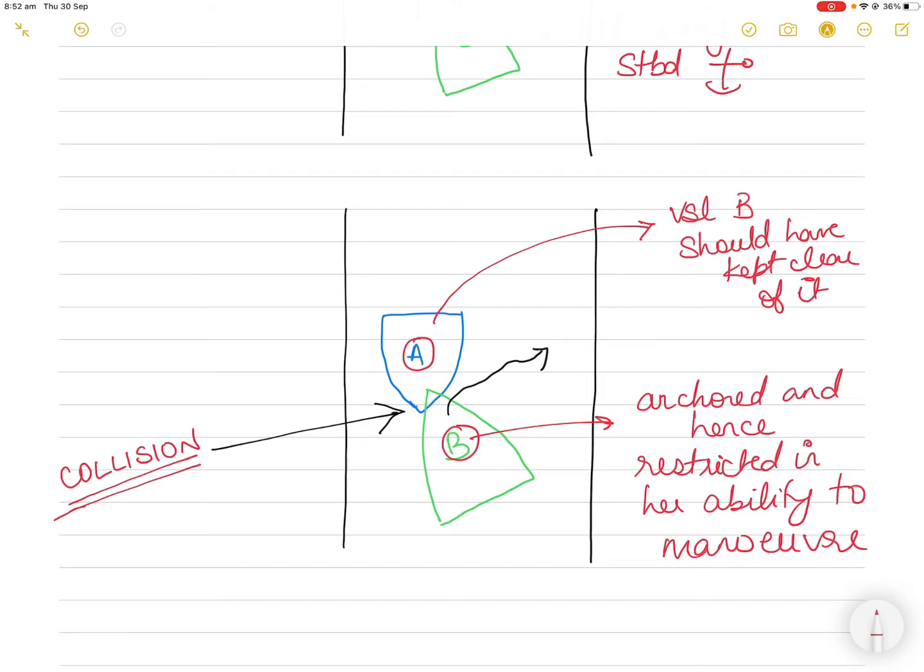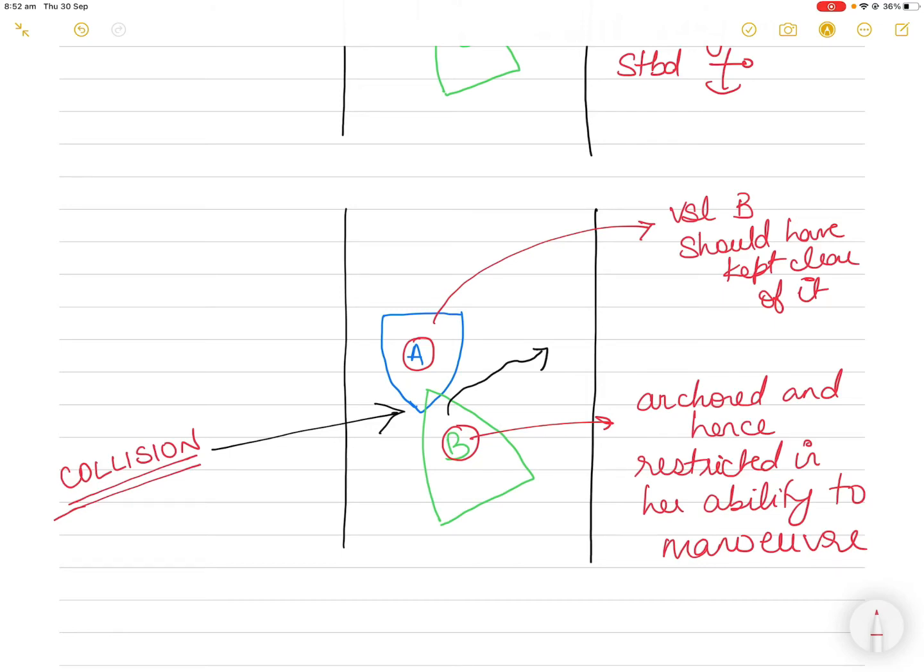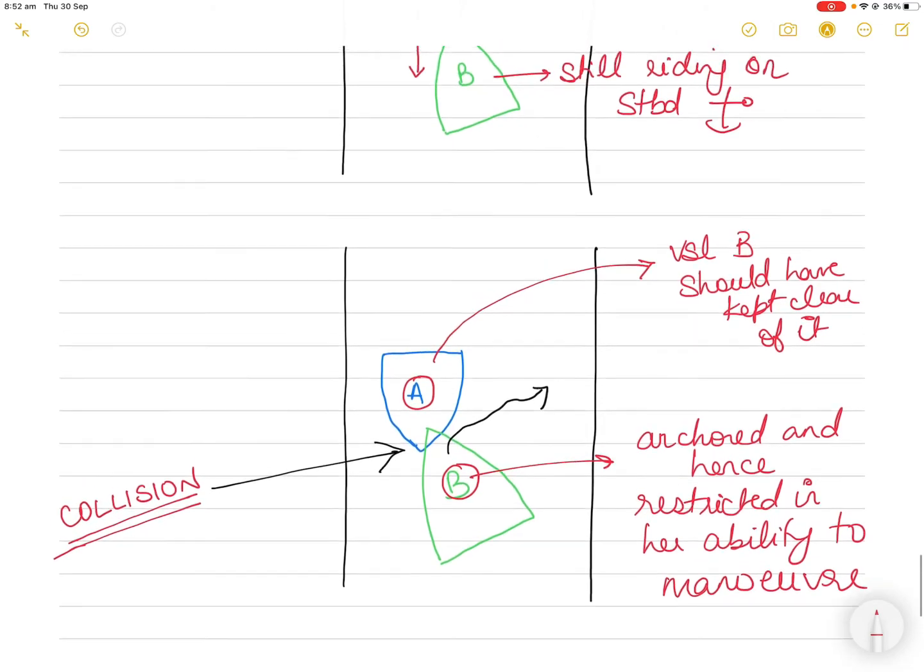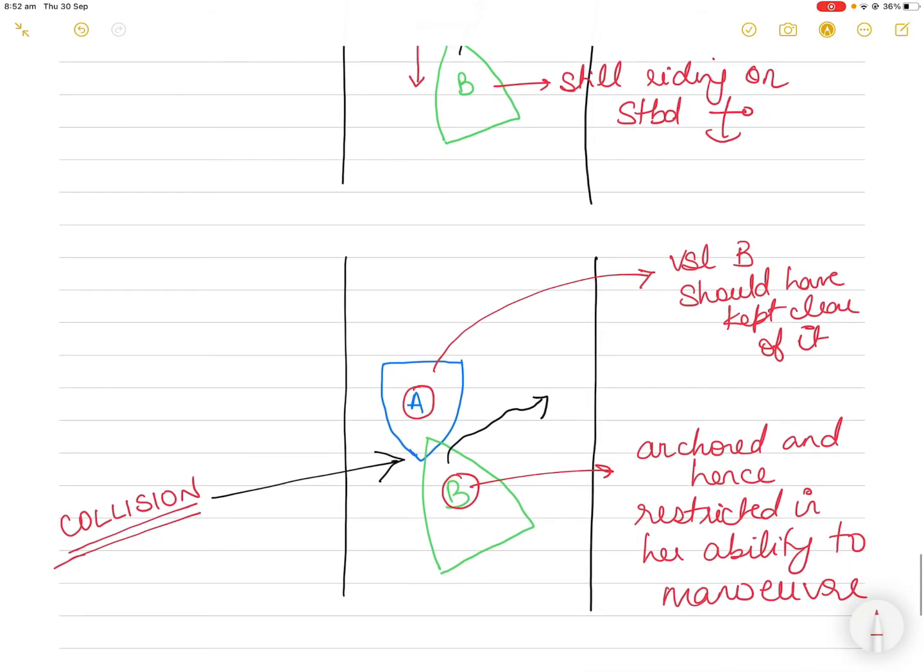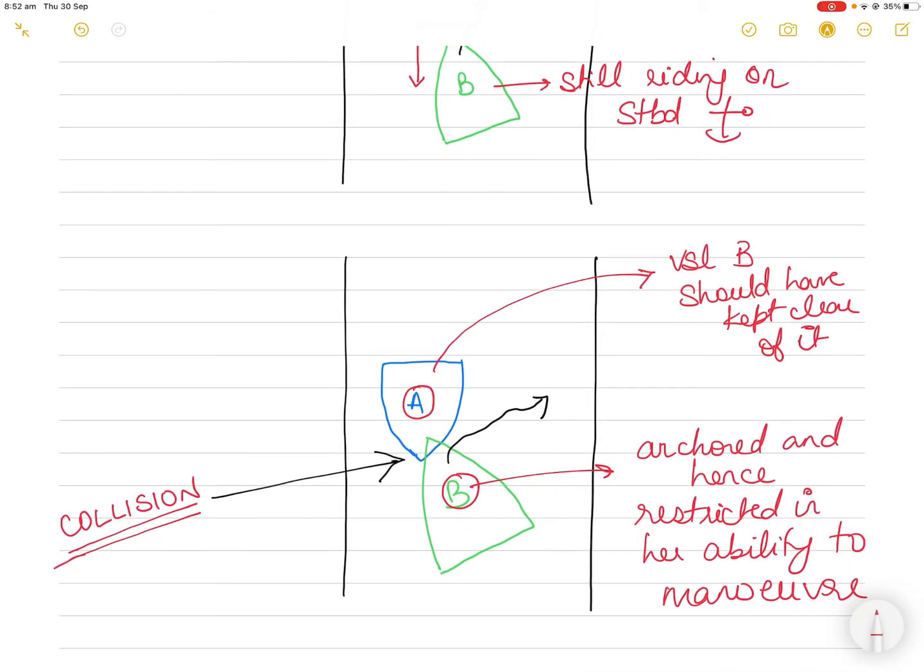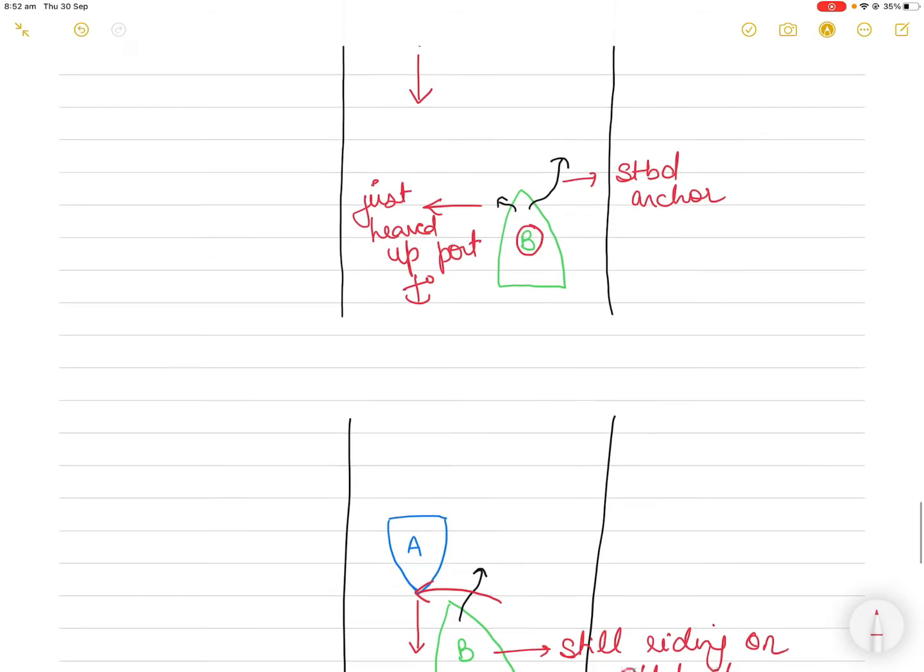Right, so what is the answer to this? So what was decided in court? Both the vessels of course went to court. Let's understand whether vessel A was correct or vessel B was correct by understanding what Rule Number 3G says.